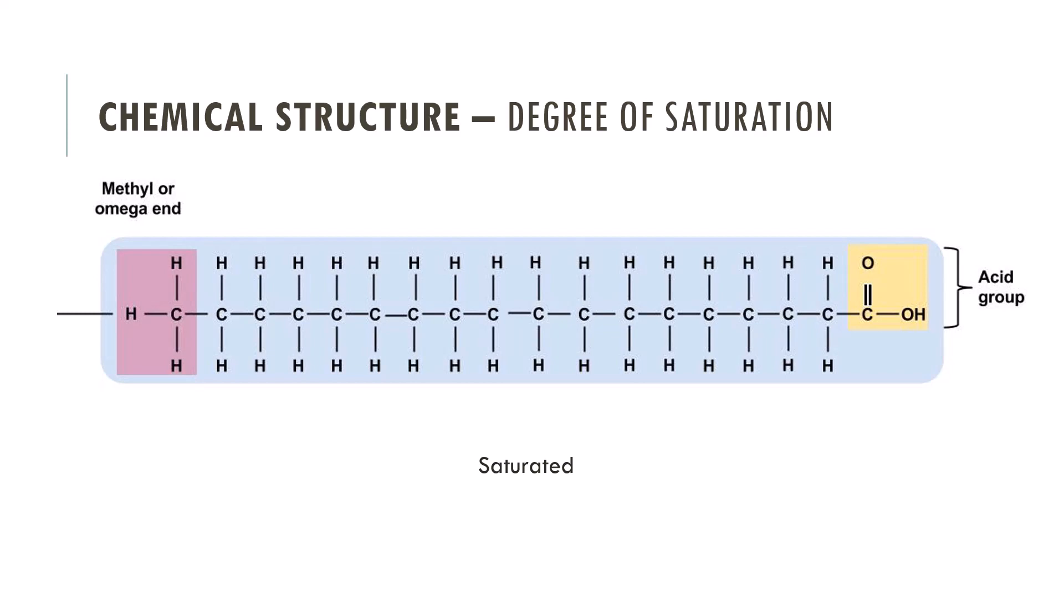Common dietary sources of saturated fats include animal products such as meat and dairy, as well as certain tropical oils. While the body requires some saturated fat for essential functions, too much saturated fat is associated with an increased risk of cardiovascular disease.